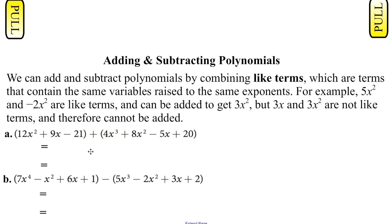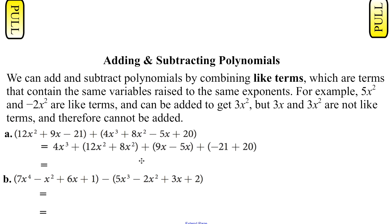So here's a couple of examples — one adding and one subtracting polynomials. We can only add the terms that are alike. 4x cubed doesn't have any other terms to add to it, so it stays by itself as the first term. Here we have 12x squared and 8x squared — those will combine to 20x squared. A plus 9x and a minus 5x are like terms and those will add to 4x. And then a minus 21 and a plus 20 will add to give us a minus 1. I've grouped together the like terms, and here is our final answer in standard form. Make sure that you're putting your answers in standard form as well.